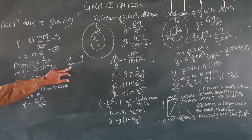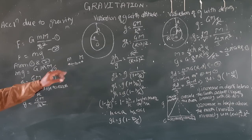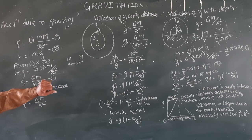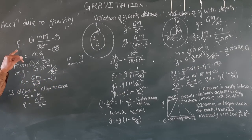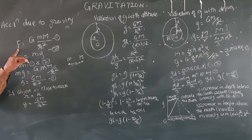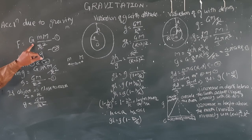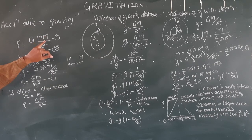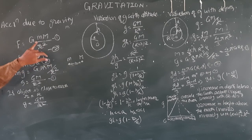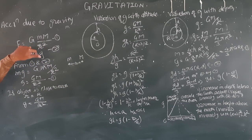The gravitational force acts and the formula is F is equal to G times m times M divided by R square, where G is the gravitational constant.